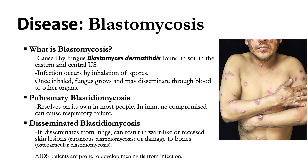Blastomycosis is one common disease among immunocompromised individuals, caused by the fungus Blastomyces dermatitidis, found in soil in the central and eastern U.S. Infection occurs by inhalation of spores, and the fungus may disseminate through blood to other organs. Pulmonary blastomycosis usually resolves on its own, but among immunocompromised patients it can cause respiratory failure. Disseminated blastomycosis can cause wart-like skin lesions (cutaneous blastomycosis), bone damage (osteoarticular blastomycosis), or among AIDS patients, meningitis.